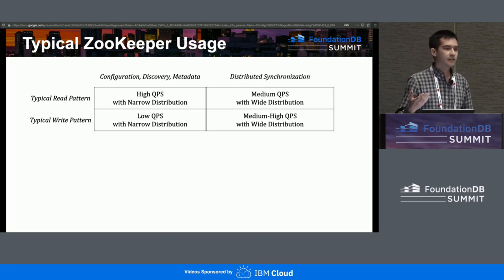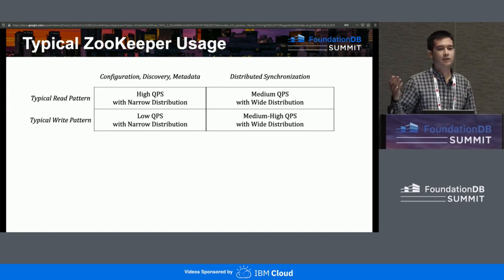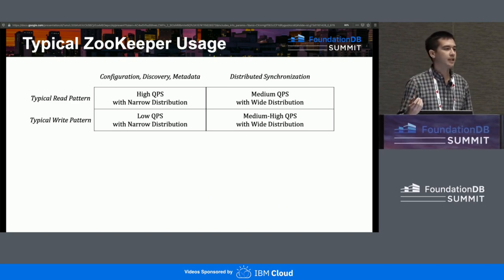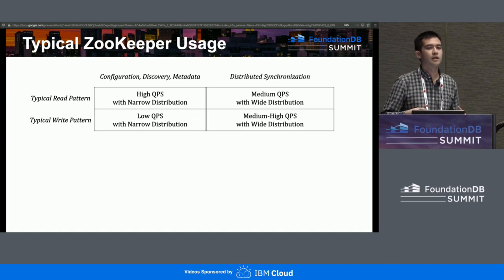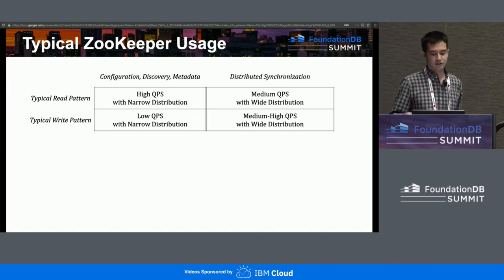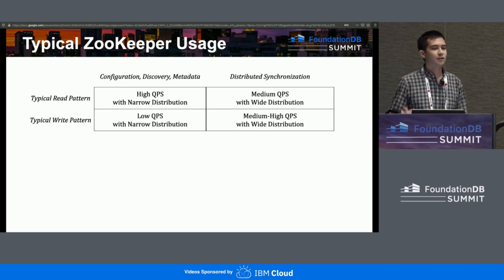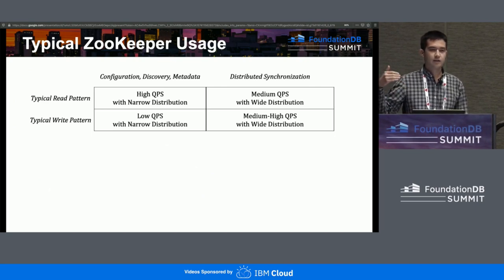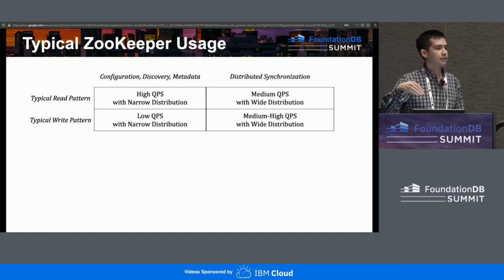The first thing I see Zookeeper used for is storing system-level configuration and service discovery data, where the total data set is pretty small. You're not updating it very often — not thousands of times per second, more like ones of times per minute — and despite that, you can have a huge amount of read throughput onto a single piece of data.